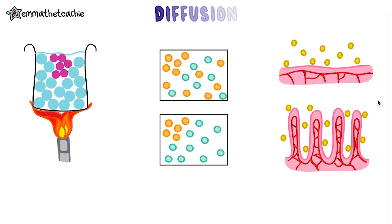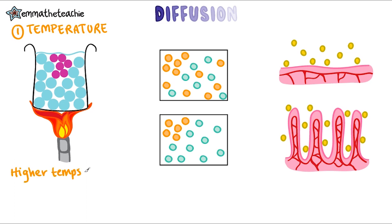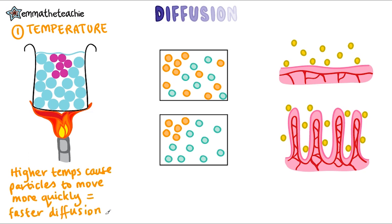There are three factors that can affect the rate of diffusion. The first is temperature. Higher temperatures cause particles to move more quickly, so diffusion will happen faster as they spread out much more quickly. Using a Bunsen burner here would make the food colouring diffuse much more quickly. Similarly, if there were a cold temperature, this would slow down the rate of diffusion.